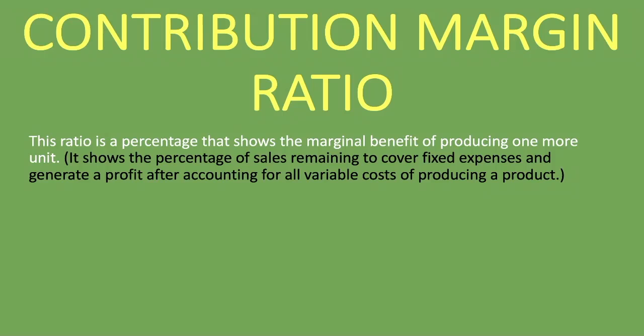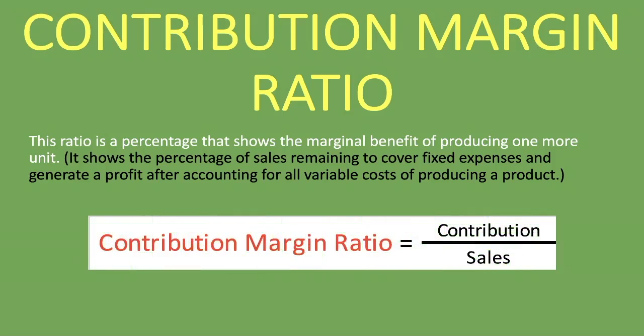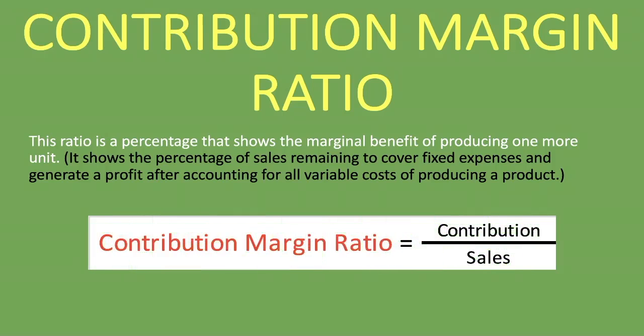What is the formula for calculating the contribution margin ratio? It's the contribution divided by the sales — that gives you the percentage. If you multiply by 100 it gives you a whole number. So: contribution divided by sales. That's as easy as it gets.